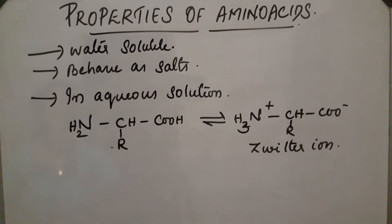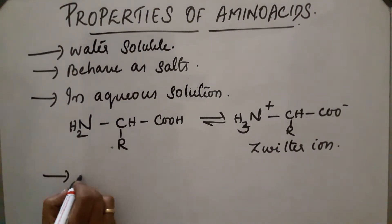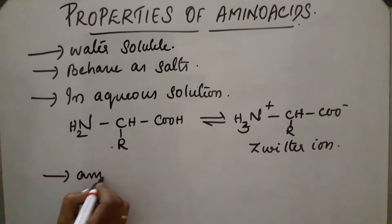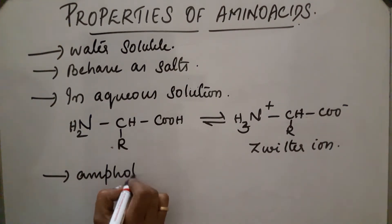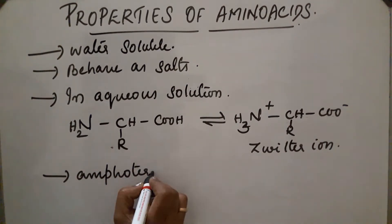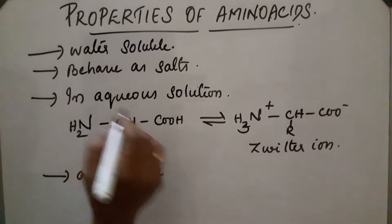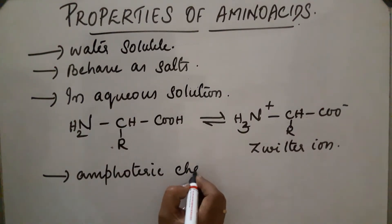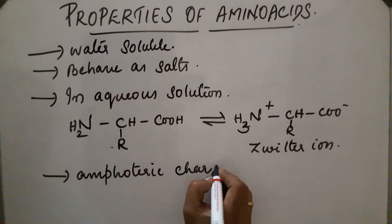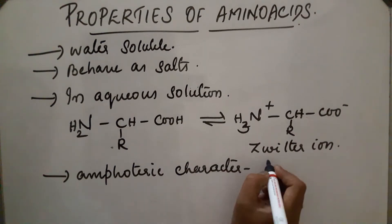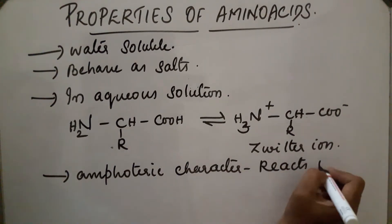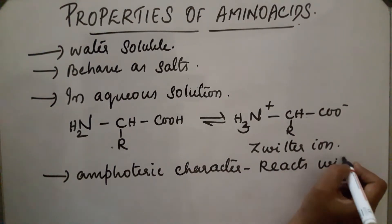Due to the presence of both positive and negative ions, they exist as having an amphoteric character. In the zwitterion form, this amino acid has an amphoteric character. Amphoteric character means it reacts with both acids and bases.